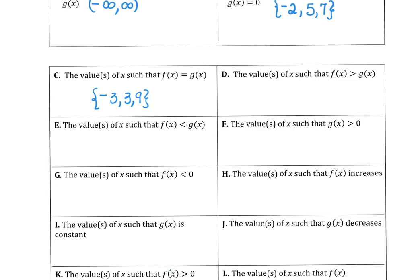On part d, f of x is greater than g of x, not greater than or equal to. So we don't want to close up the endpoints on our intervals. Negative infinity to negative 3, f is above g, and f is greater than g on the interval from 3 to 9. In part e, where f is less than g, should be from negative 3 to 3 and from 9 to infinity. On part f, g is greater than 0 from negative 2 to 5, and also from 7 to infinity.